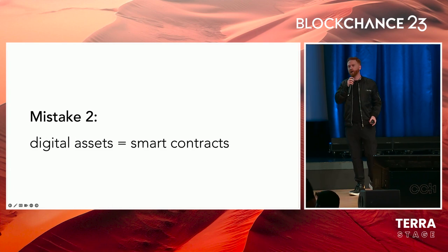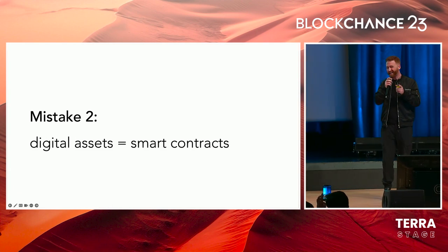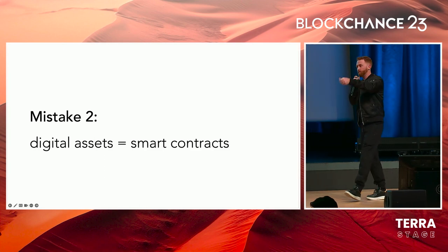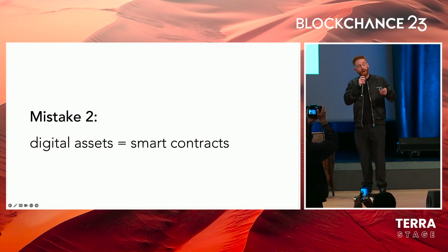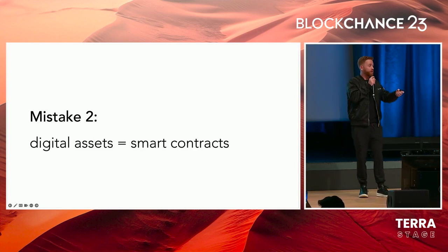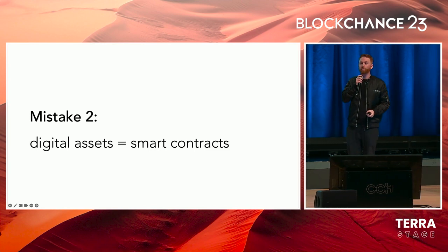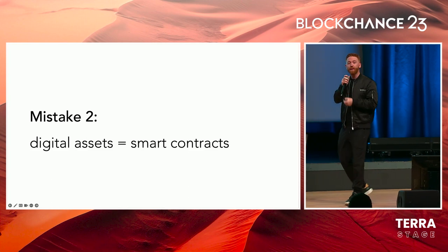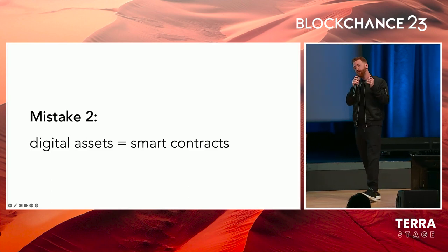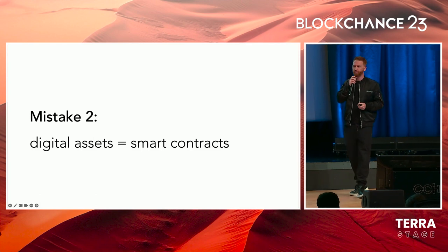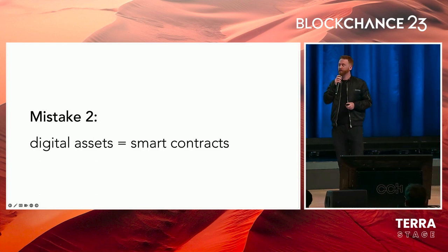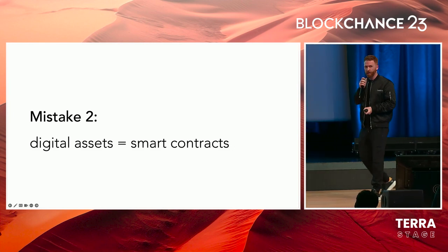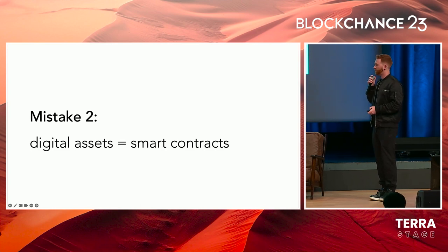That's not the only cardinal sin crypto has made. The second mistake was that digital assets equal smart contracts. That wasn't actually how crypto started. Bitcoin itself is not a smart contract — it's a native feature of the ledger, and the ledger itself maintains the balances of Bitcoin. Ethereum itself is not a smart contract either, unless you're using ERC-20 wrapped Ethereum. Generally speaking, Ethereum is a fundamental feature of the underlying ledger.